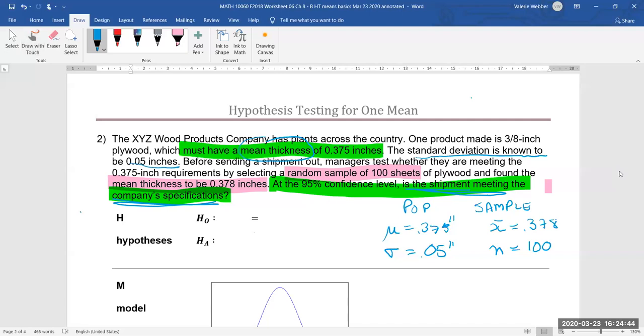So our hypotheses are going to be H₀: μ equals 0.375, and because we want to know if it has changed, this is a "has it changed" test, so Hₐ: μ is not equal to 0.375. And this is a two-tail test.